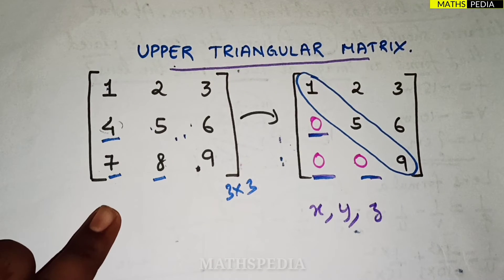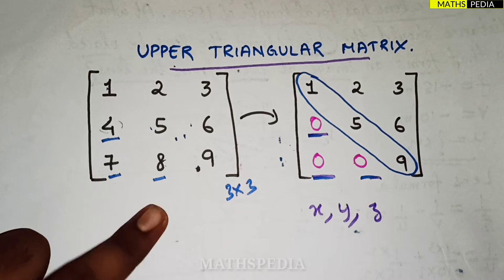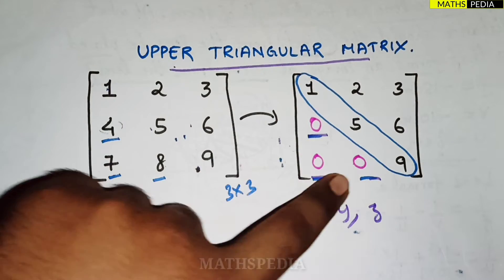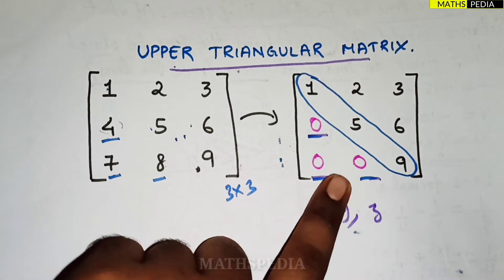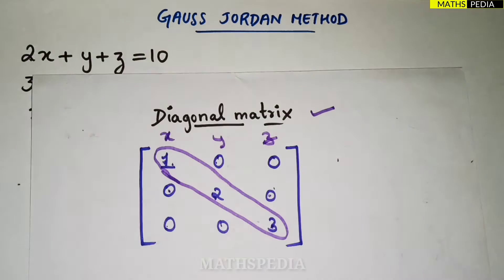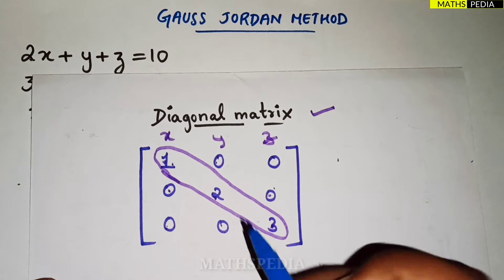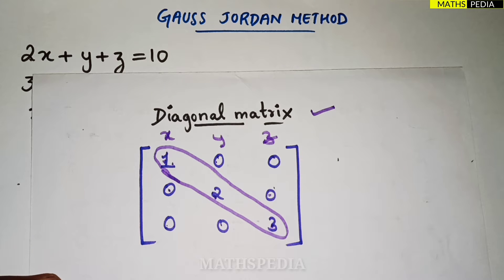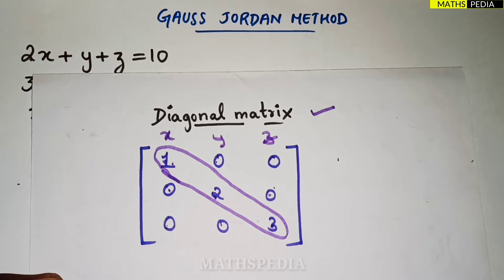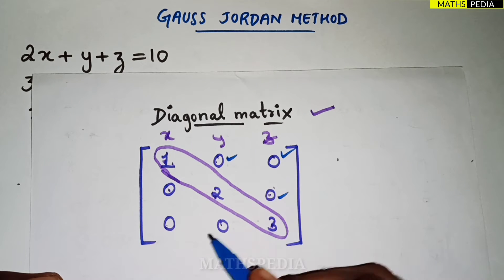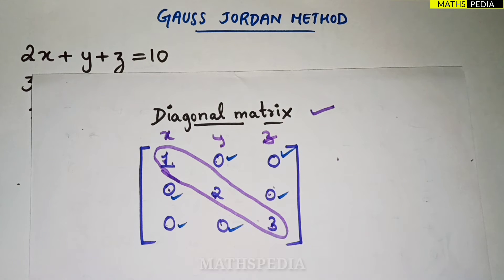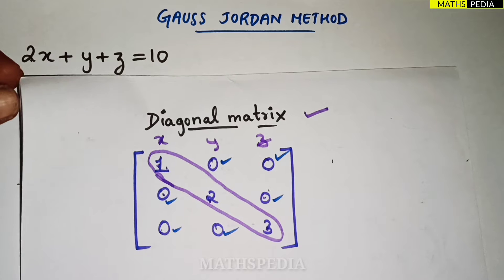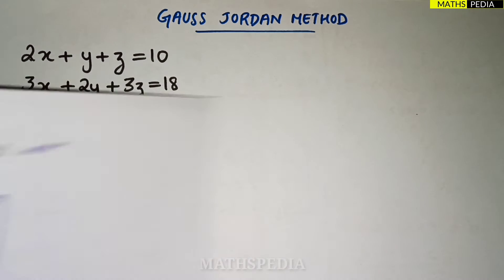In Gauss Elimination we reduce the matrix into upper triangular form, where the diagonal elements are present and everything below is zero. In a diagonal matrix, the main diagonal elements can be zero or some constant value, but all other non-diagonal elements must be zero. At the end you directly get the values of x, y, and z.